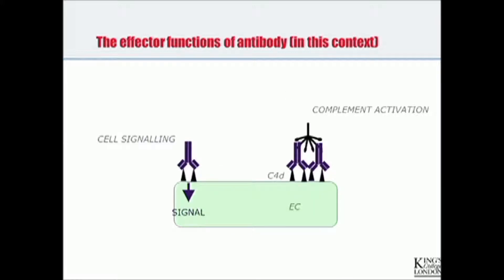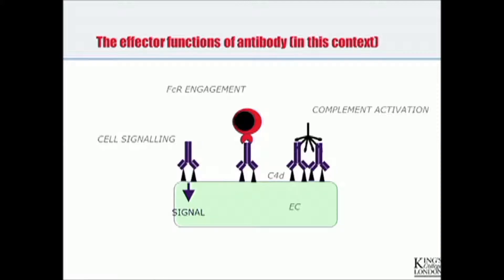Another way antibodies can act is through cell signaling, by binding molecules on the surface capable of transmitting signals to cells. A third mechanism is by being bound by FC receptors on leukocytes. I'm going to go through all the evidence backing up the involvement of these effector mechanisms in transplantation, mainly in animal models — at the end of which you'll realize just how important targeting complement is, even when these other mechanisms are involved.